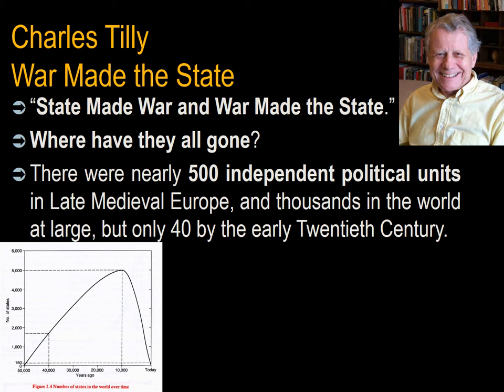Rather, where have they all gone? There were nearly 500 independent political units in late medieval Europe, and thousands in the world at large. But by the beginning of the century, there were perhaps 40 independent states on the entire planet. What had happened?